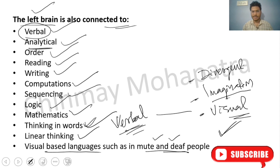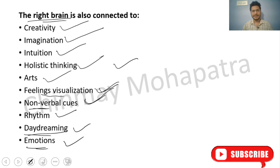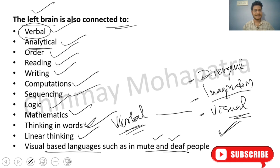So left and right brain control the brain's raw functions, which we divide into two hemispheres. They represent different thinking and different analysis — logic, verbal, nonverbal, imagination, holistic, logic, orderly reading, writing, and visual.